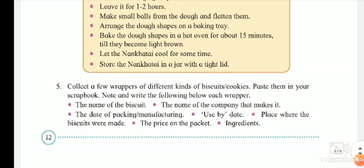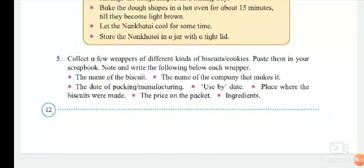The last exercise: collect a few wrappers of different kinds of biscuits or cookies and paste them in your scrapbook. Below each wrapper, write the following: the name of the biscuit, the name of the company that makes it, the date of packing or manufacturing, the used-by date, the place where the biscuits were made, the price on the packet, and the ingredients. This is the end of Chapter 6.